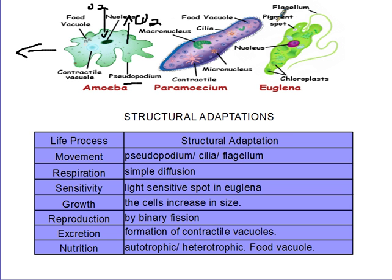For sensitivity, the euglena has a pigment spot which is used to move closer to where there is light. Since euglena has chloroplasts, it moves toward light so that it can photosynthesize. For all these organisms, if they encounter obstacles or anything they do not like, they move in the opposite direction.